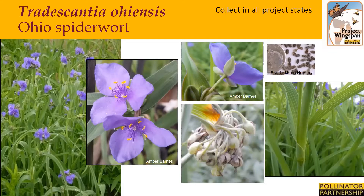Tradescantia ohiensis, or Ohio Spiderwort, can be found in a variety of habitat areas. It grows to be approximately two to four feet tall and remains mostly unbranched. Its gray or blue-green alternate leaves are up to 15 inches long and one inch across, somewhat resembling grass blades. The light violet to blue-violet flowers occur in small clusters on hairless flowering stems at the top of the plant. The best time to collect seed is in midsummer. Seeds ripen in capsules wrapped in calyx and will drop out quickly when the capsules open. Start checking about six weeks after flowering. These seeds are typically intolerant of dry storage, so clean the seed and expedite shipping to Mason State Nursery.